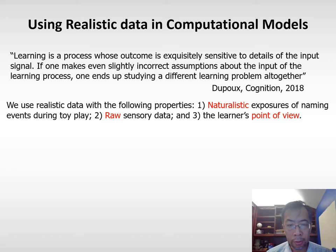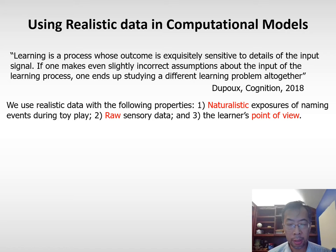So what kind of data would be realistic? The data we collected have three critical properties. First, we want data from naturally occurring contexts — in our case, child-parent free-flowing toy play. Second, we want raw sensory data, not pre-processed data or symbolic representations. Third, we want data from the learner's point of view. This is critical because what matters to learning is the information that reaches the learner through their sensory system, not just information present in the environment.